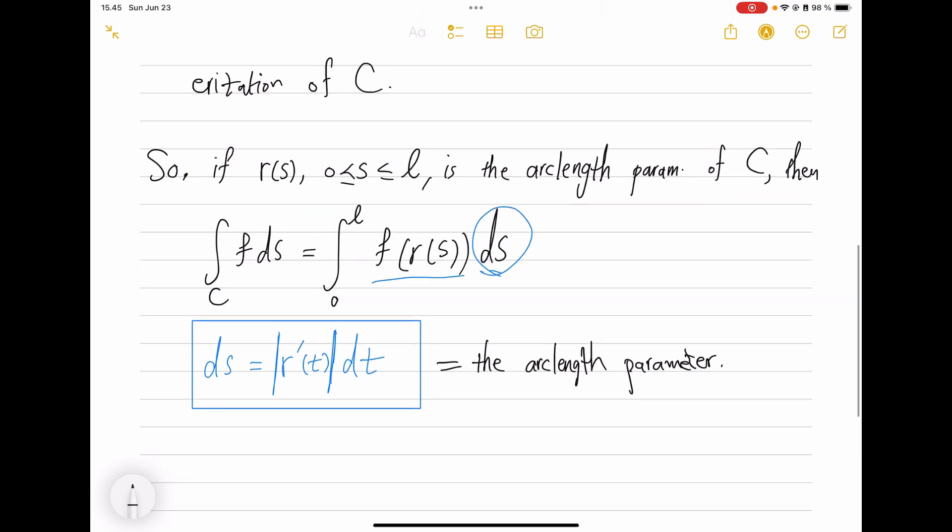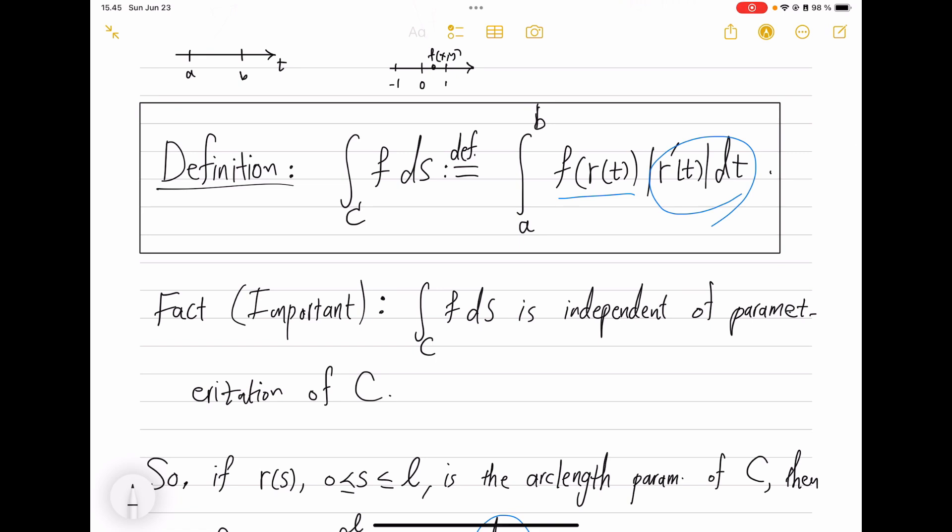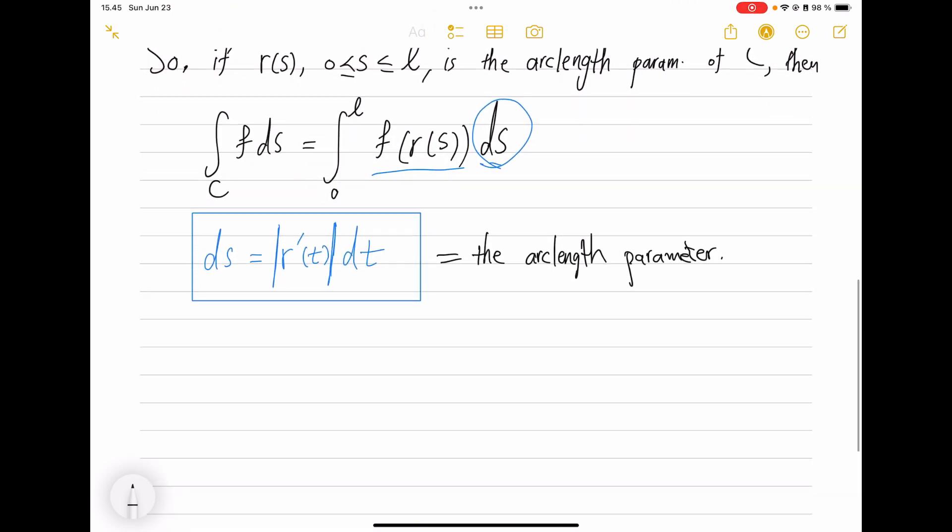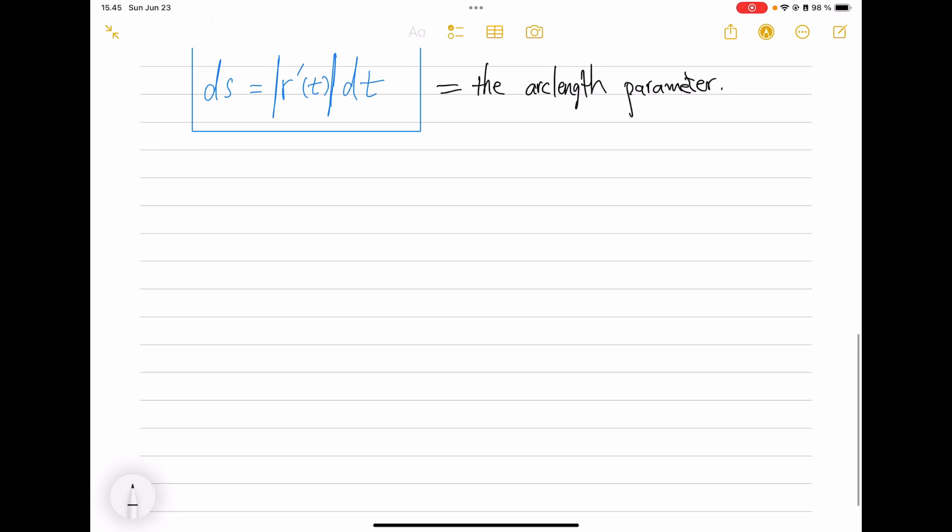The problem with arc length parameterization is it is difficult to find in practice and it gets very nasty calculation-wise. But that's the story of how you integrate the scalar function over a curve.